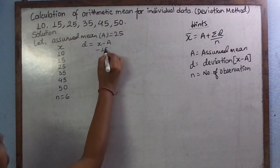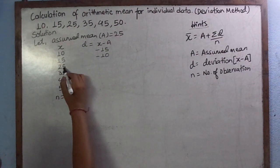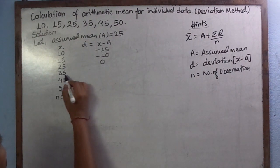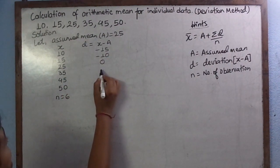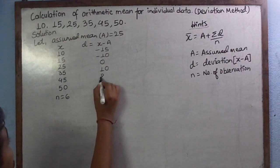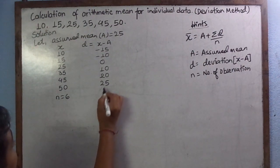It is minus 15. 15 minus 25 equals to minus 10. 25 minus 25 equals to 0. 35 minus 25 equals to 10. 45 minus 25 equals to 20. 50 minus 25 equals to 25.